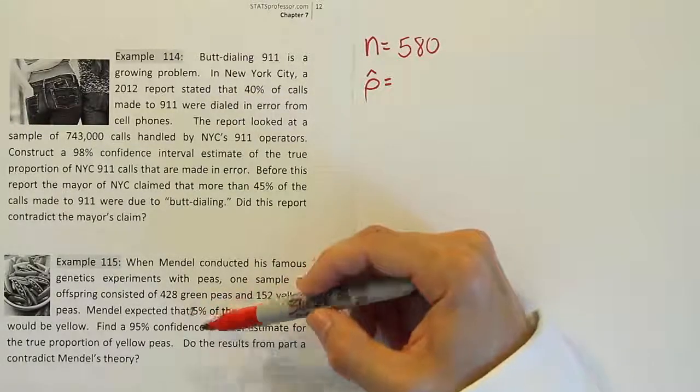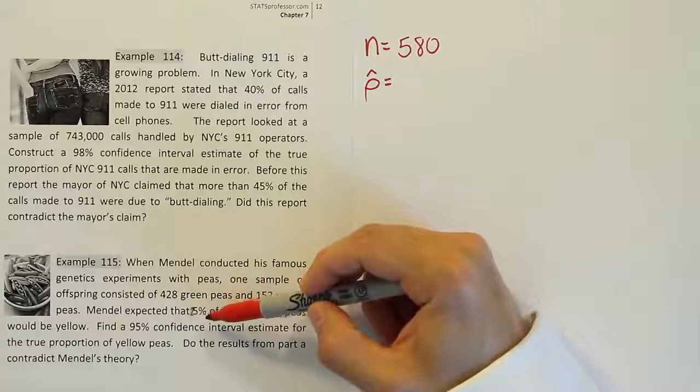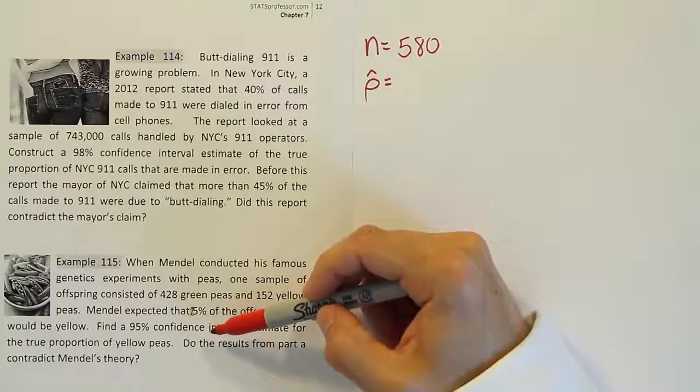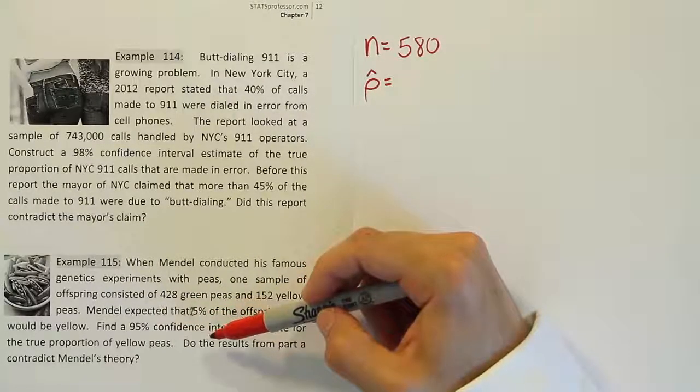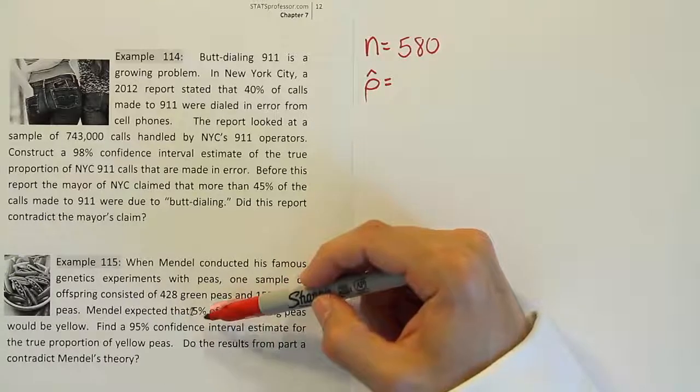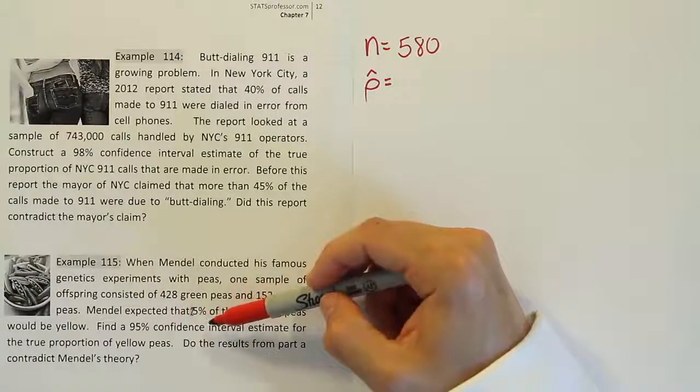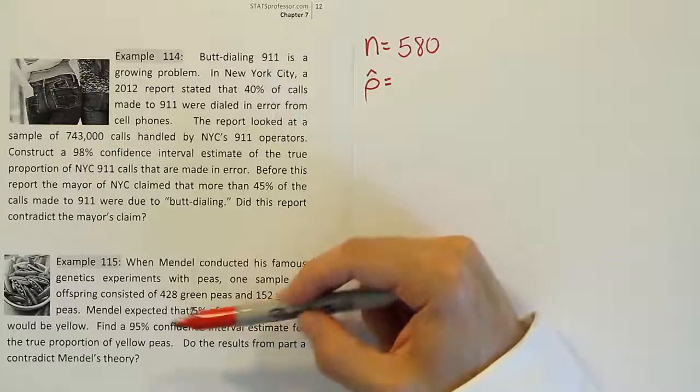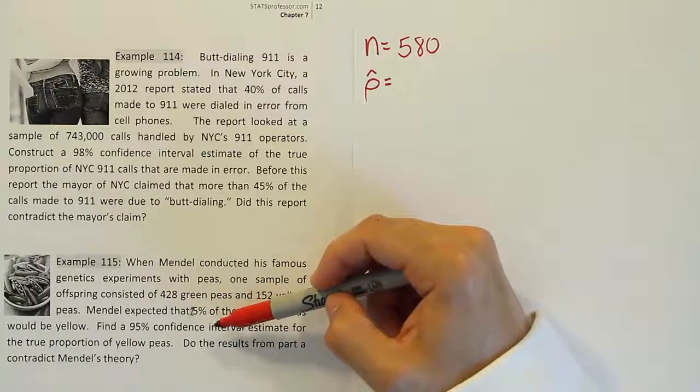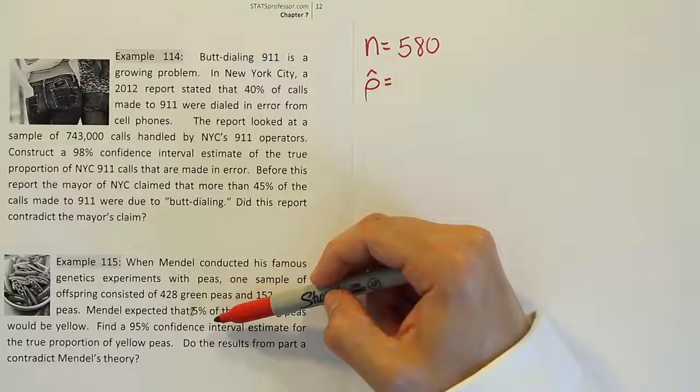And in our case, this 25% came from Mendel's expectation, right? It's what he thought in theory should happen. That's not a sample proportion. It doesn't come from a sample of data. It comes from this guy's mind. So Mendel decided that the percent should be 25. That's something coming from his head, from his own theoretical understanding of the subject.